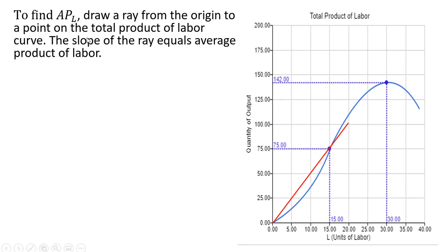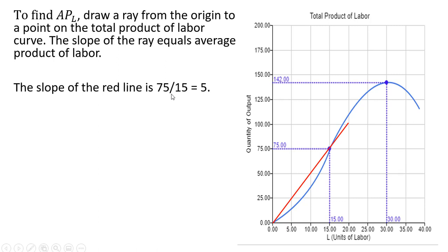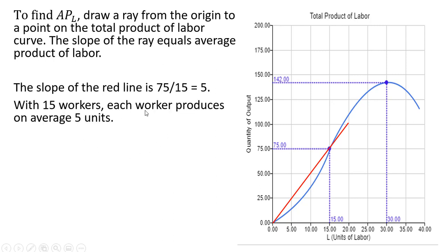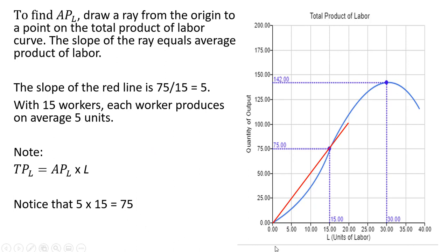Let's talk about the average product of labor some more — this is output per worker. To find the average product of labor, draw a ray from the origin to a point on the total product of labor curve; the slope of that ray equals the average product of labor. For example, connecting a ray to the point at 15 workers, the slope is 75 divided by 15, or 5 — that's the average product of labor at 15 workers, meaning each worker produces on average 5 units. We can also calculate total product of labor by multiplying the average product of labor (5) by the number of workers (15) to get total output of 75.